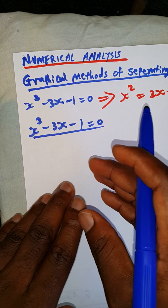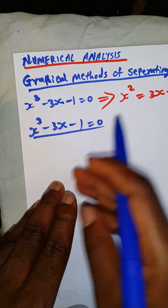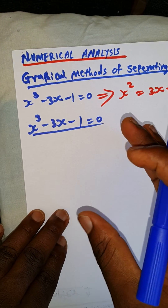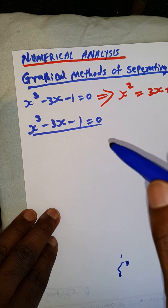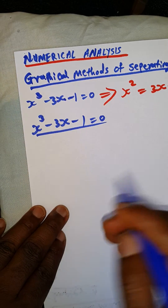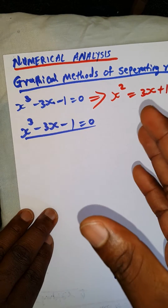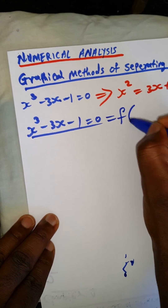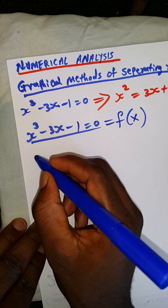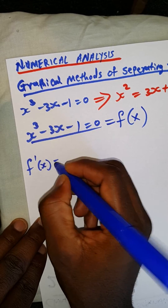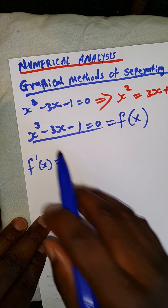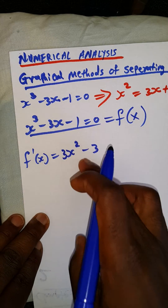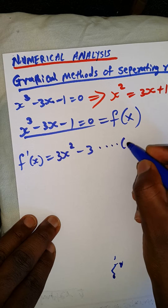I'm going to talk about both methods — using the table first, and if we still have time, using the domain and the rest. If not, the next video will cover it. So now let me talk about this using the easiest way for students to understand, which is using the table. Now the first thing to do in any equation when you want to find the roots is to find the first derivative — this is if this thing is a function of x. The first derivative, f prime of x, is 3x squared minus 3.